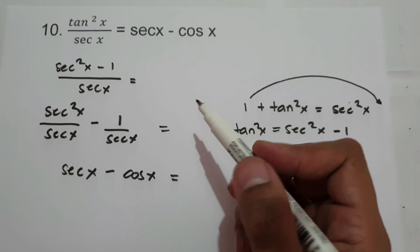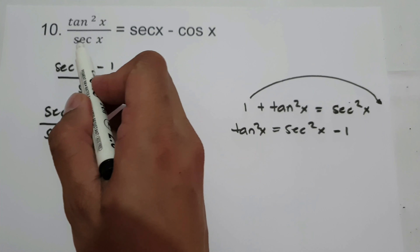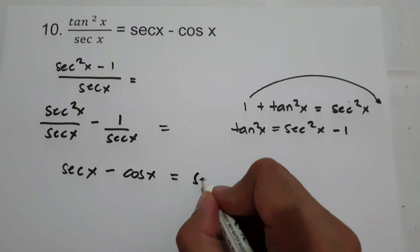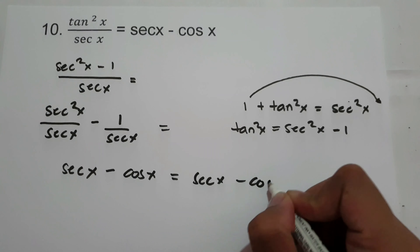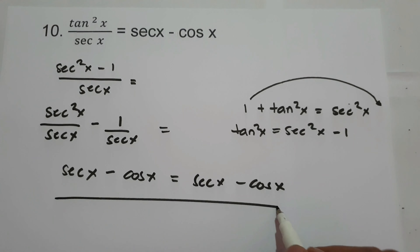Secant squared x divided by secant x, that is secant x. Then we have negative 1 over secant x, that is cosine x. Therefore, we prove that tangent squared x over secant x is equal to secant x minus cosine x.